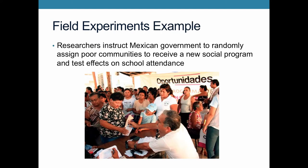An example of a field experiment comes from Mexico with the implementation of the Oportunidades program. Researchers instructed the Mexican government to randomly assign poor communities to receive a new social program. This program, called Oportunidades, is a conditional cash transfer, meaning that families would receive cash benefits if they enrolled their children in school. A major problem is that children in poor countries like Mexico face a trade-off — parents want to send them to school, but they need their labor to help around, especially if they are farming.